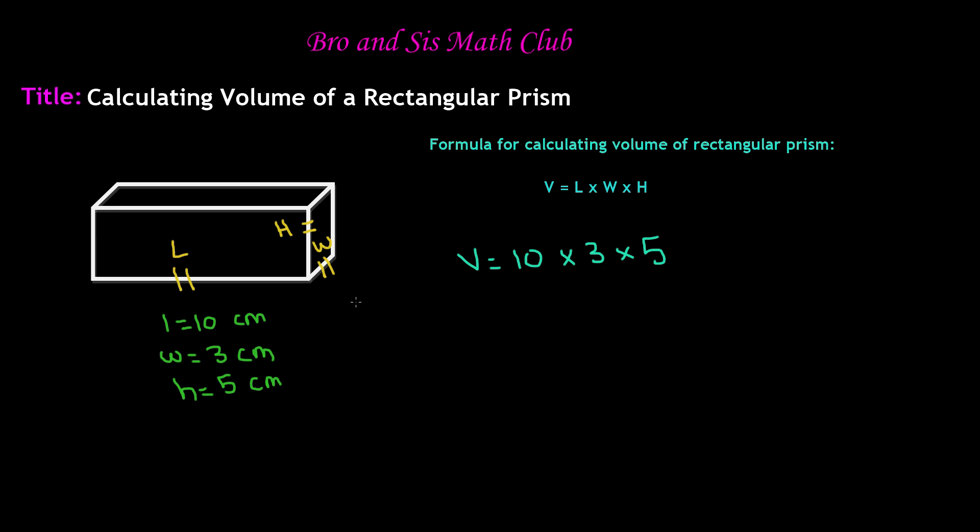Either way, you're getting the same answer. When we go ahead and multiply, we know that 10 times 3 is 30, times 5 is 150. So you get volume equals 150.